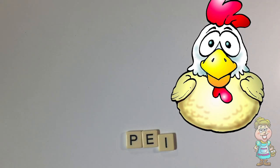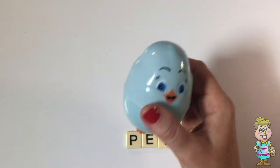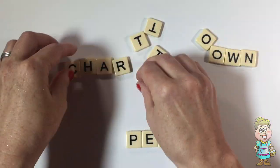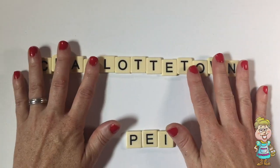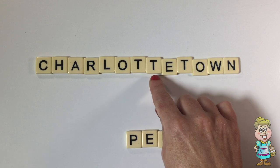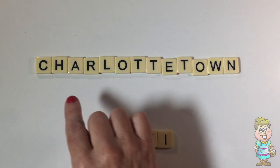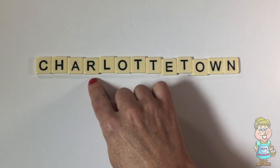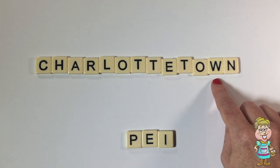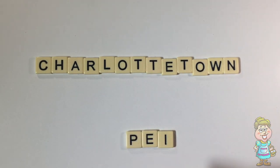Pocky, can you tell us what the capital of Prince Edward Island is? Let's see how many letters this word has. One, two, three, four, five, six, seven, eight, nine, ten, eleven, twelve, thirteen letters. That's a big, long word. C-H-A-R-L-O-T-T-E-T-O-W-N. Charlottetown. Charlottetown is the capital of Prince Edward Island.